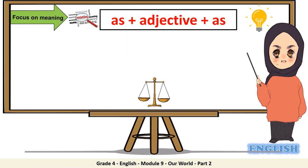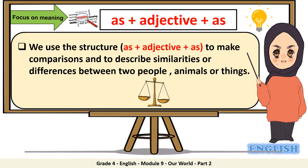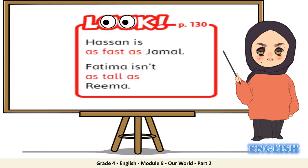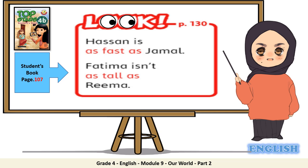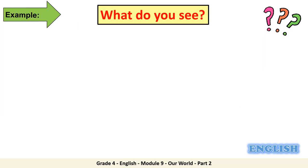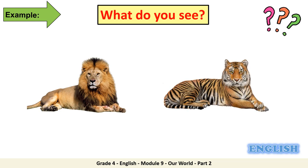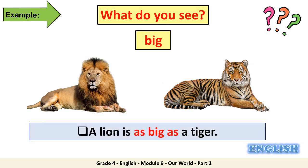Let's start with identifying the new structure: as plus adjective plus as. We use this structure to make comparisons and to describe similarities or differences between two people, animals, or things. Turn to your student's book, page 107. Listen carefully to the look box. Hassan is as fast as Jamal. Fatima isn't as tall as Rima. What do you see? A lion and a tiger. Are they both the same size? A lion is as big as a tiger.